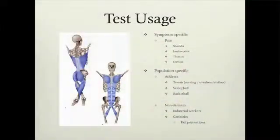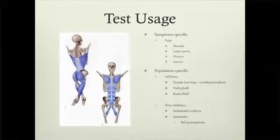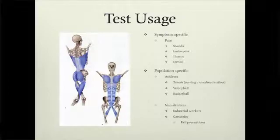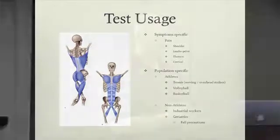Specifically with athletes in the overhead population — tennis for the serving motion, volleyball, basketball — and for non-athletes: industrial workers, but also geriatric population for fall prevention. Because if they don't have enough shoulder mobility to reach something on a top shelf, they're going to start tiptoeing, which throws their balance off and puts them at greater risk for falling due to insufficient shoulder mobility.